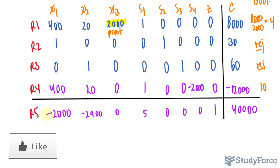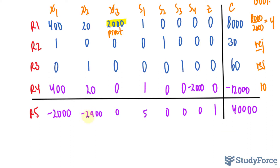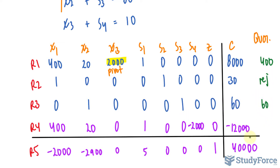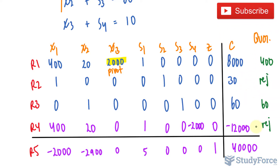Reanalyze the objective function row to find the most negative number — it is now negative 2,900, which becomes the new pivot column. Calculate new quotients: 8,000 divided by 20 equals 400; 30 divided by 0 — reject; 60 divided by 1 equals 60; negative 12,000 divided by 20 is negative — reject. Of the remaining values, 60 is the smaller, so the 1 in row 3 is our new pivot.